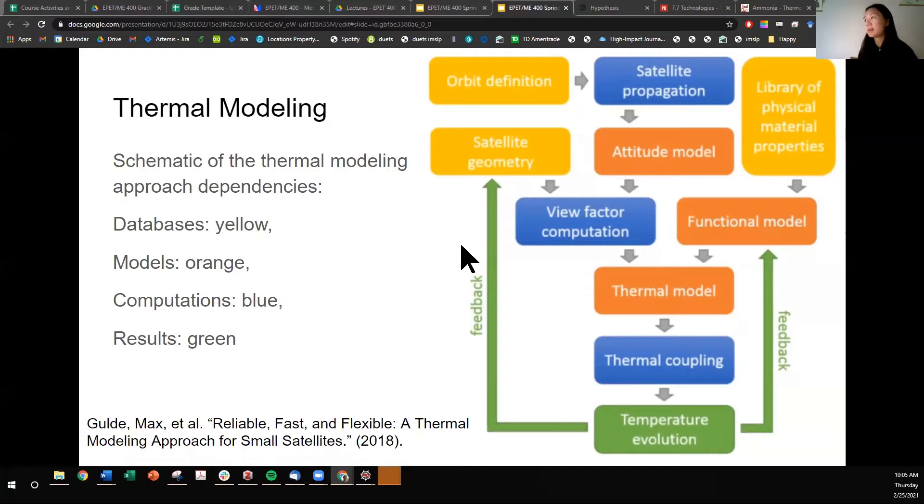So here's a schematic and we're just going to walk through it where databases are yellow. Databases are like orbit definition, so that's something you define, your satellite geometry which is the CAD and you also define that, and you also pick the physical material properties of the different components.